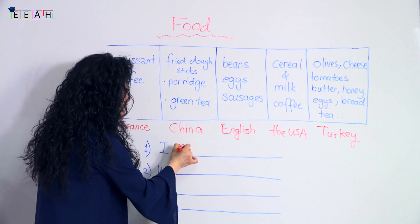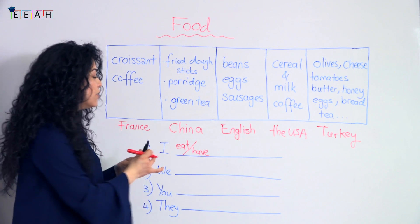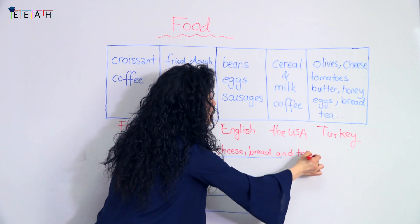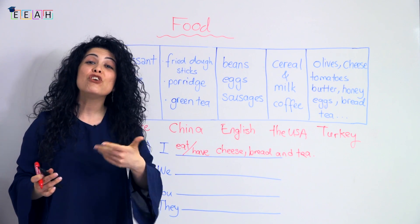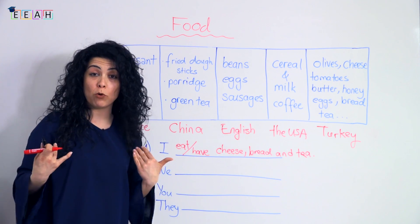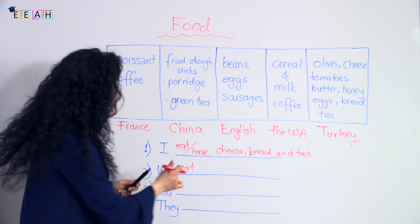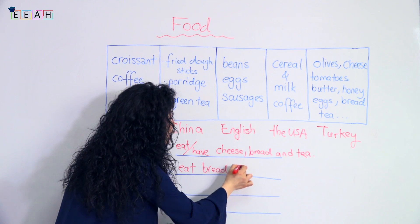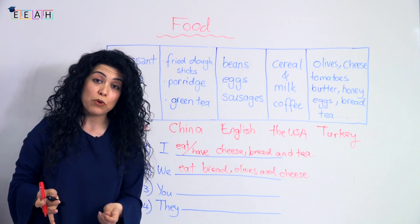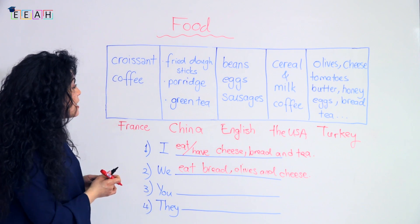Now I've started four sentences. Let's look at the menu and complete them. You can say 'eat' or 'have.' So: I eat or I have. For example: I have cheese, bread, and tea for breakfast. What about you? Let's say I am Turkish, so I would say: we eat bread, olives, and cheese. Turkish people definitely have bread, olives, and cheese — breakfast without cheese and olives is not breakfast for us!